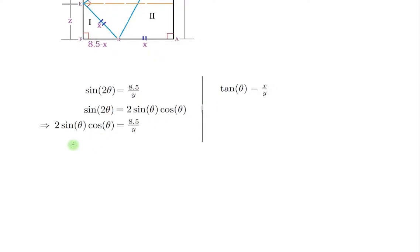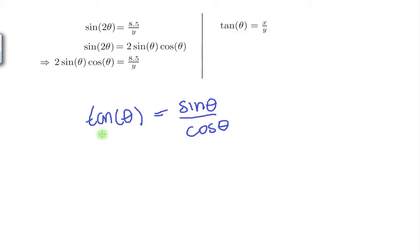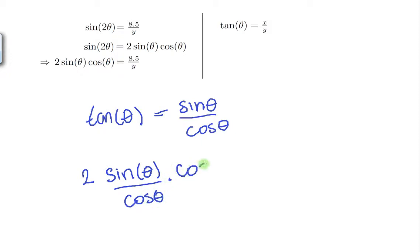Now let's start with this information. I want to change 2 sine of theta cosine of theta into tangent. How can I do that? Well, tangent equals sine over cosine. So I'm going to use this fact to rewrite the expression. We have 2 — now we need a cosine in the denominator, but to do that I need to divide by cosine here and multiply by cosine on the right side, giving cosine squared. So that again equals 8.5 over Y.